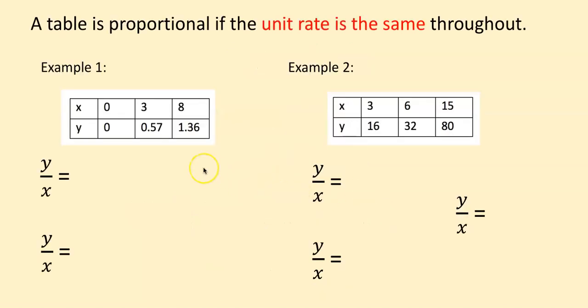So all we need to do is use the unit rate formula k equals y divided by x, find the unit rate by using each point, and then see if the unit rate is the same.